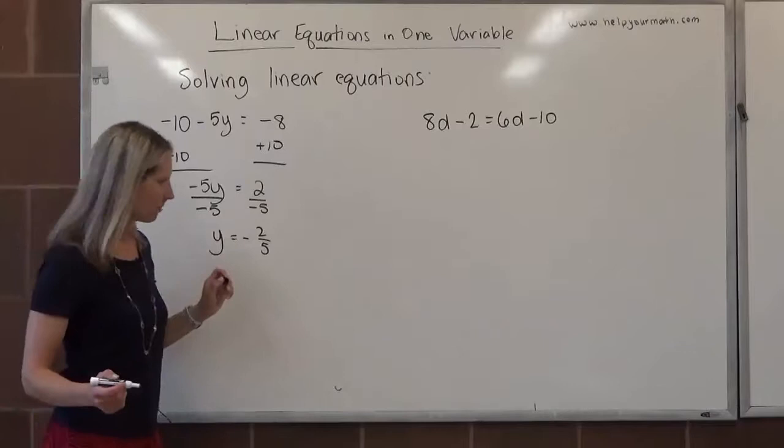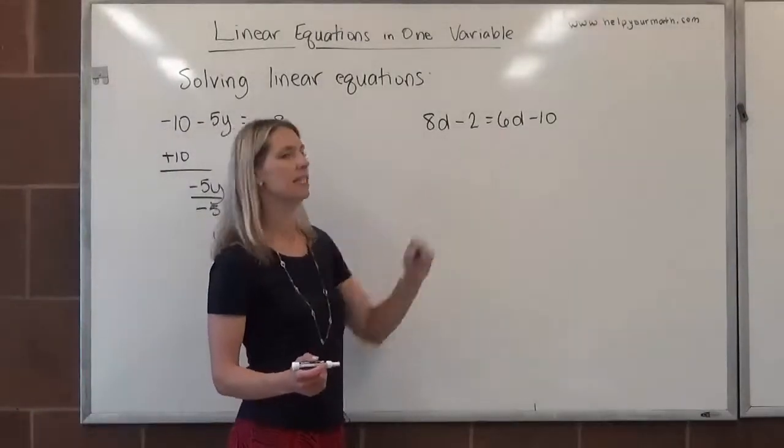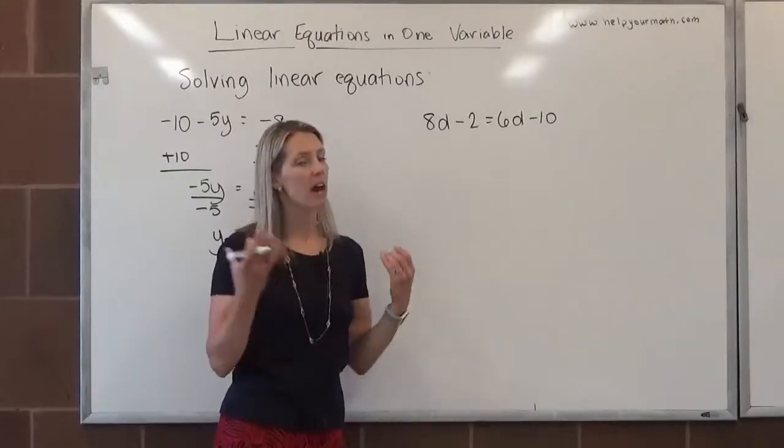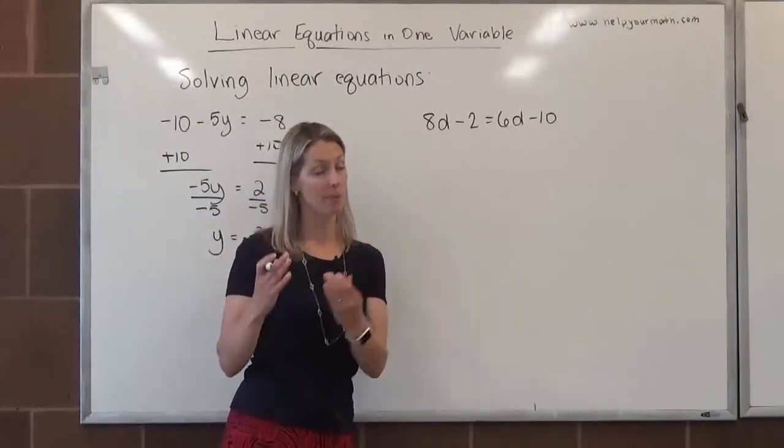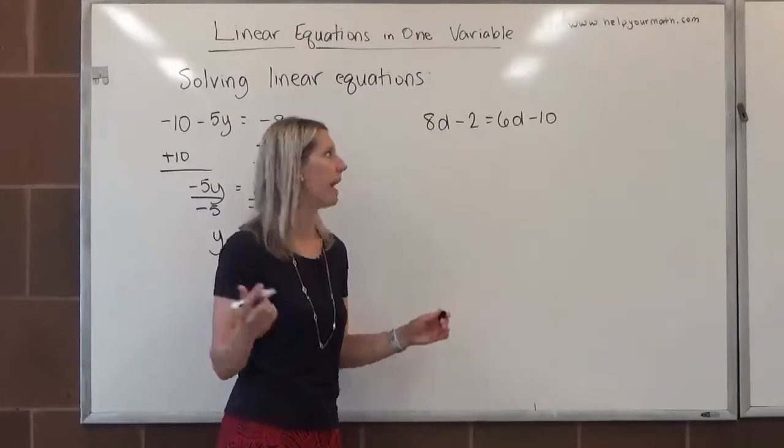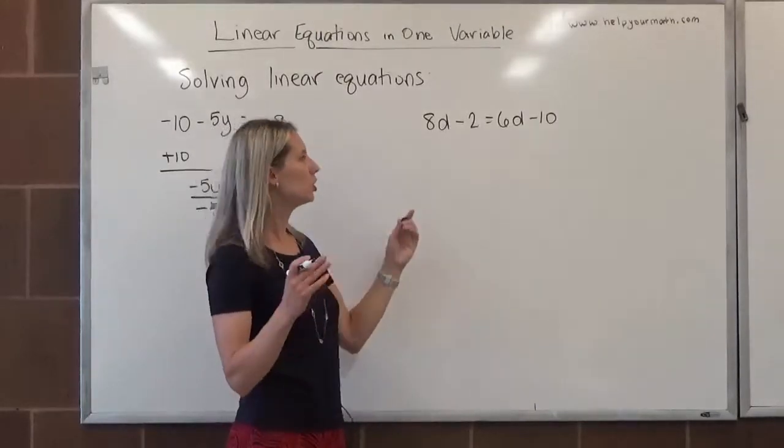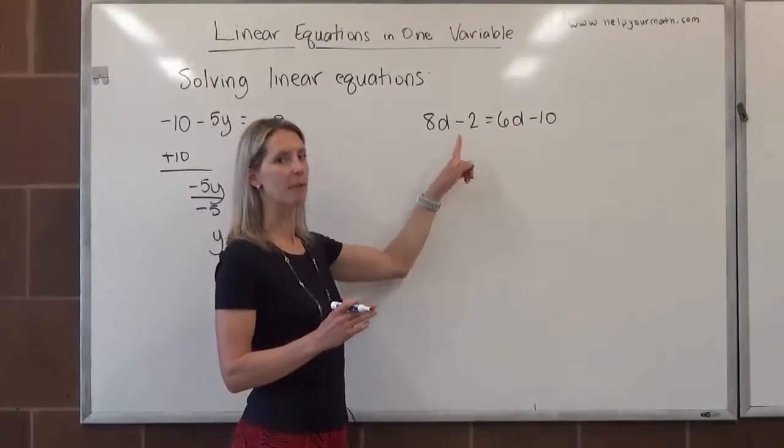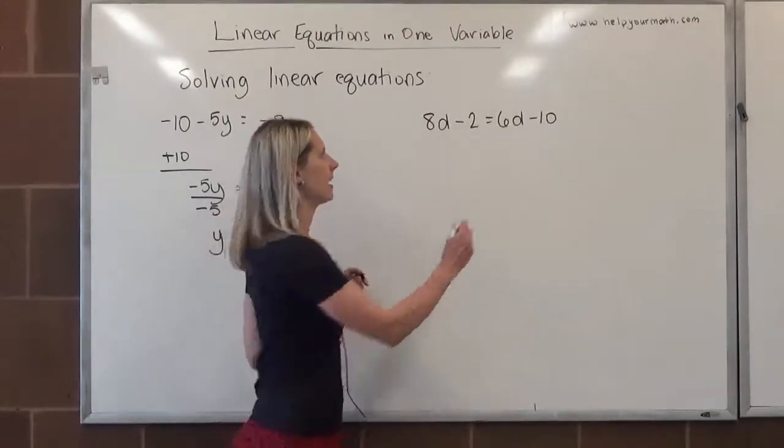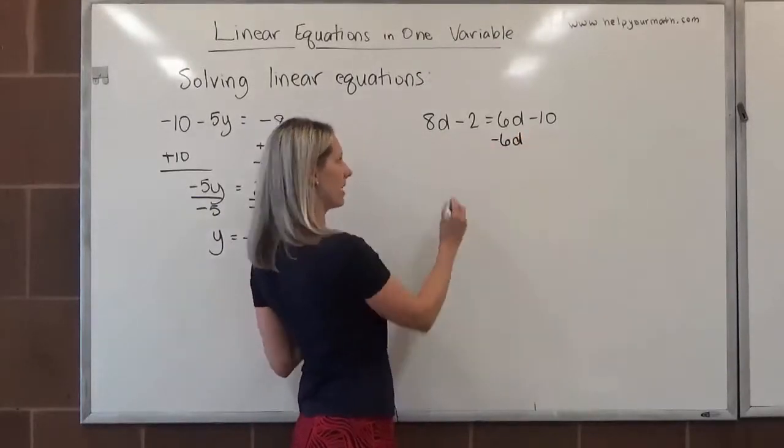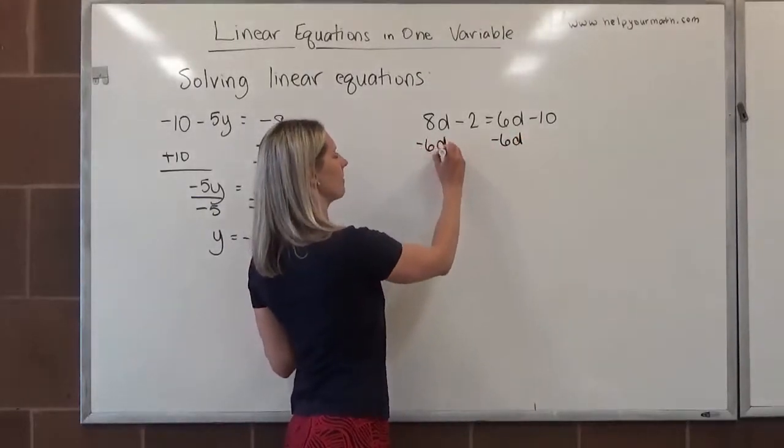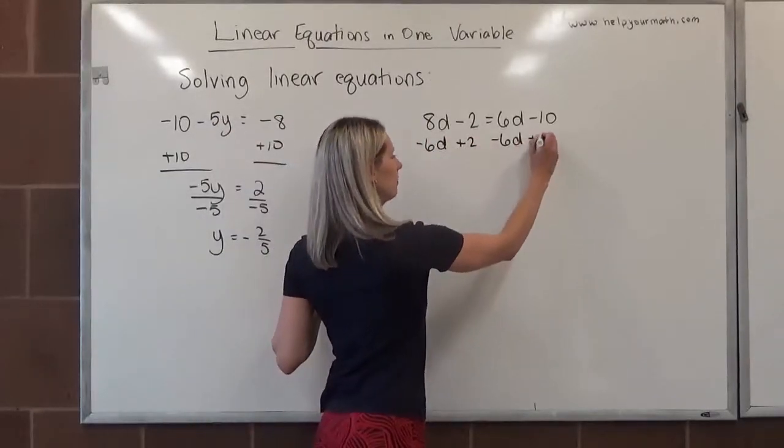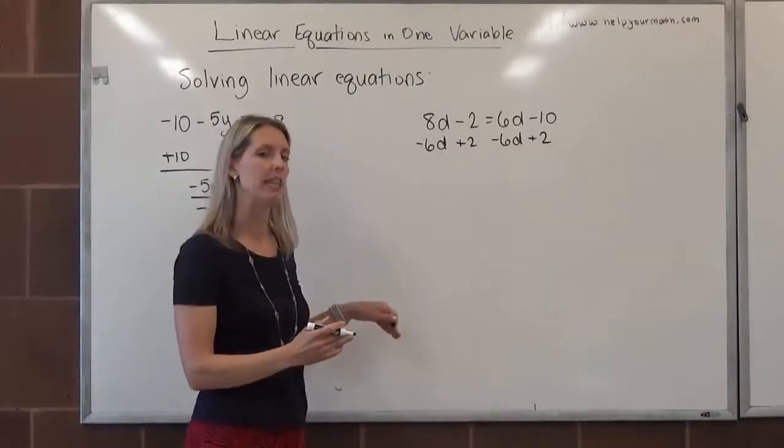Looking at the second equation, we have a d on the left-hand side and a d on the right-hand side. So we want to get the variables together on one side. What we could do is two steps in one, where not only am I going to move the variable term to the left-hand side, but I might move the constant to the right-hand side. So I can subtract 6d from both sides and also add 2 to both sides right now.